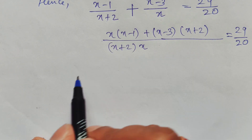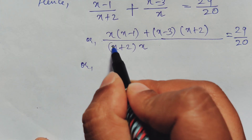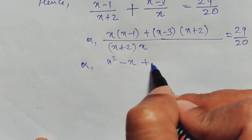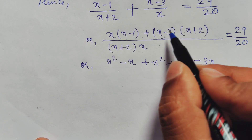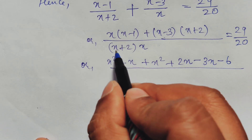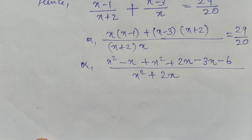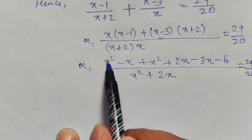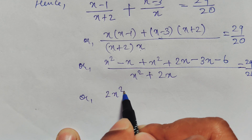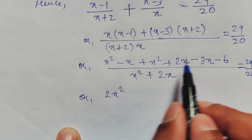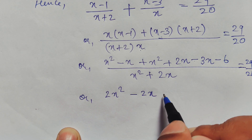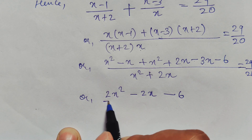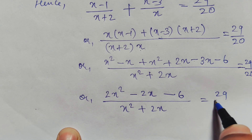Expanding the numerator by opening brackets: x times x gives x squared, minus x times 1 gives x, plus x times x gives x squared — wait, simplifying: we get x squared minus x, plus x times 2 gives 2x, minus 3 times x gives 3x, minus 3 times 2 gives 6. The denominator is x times x plus 2, giving x squared plus 2x. This equals 29 upon 20. Now simplifying like terms in the numerator: combining the x squared terms gives 2x squared minus 2x minus 6 over x squared plus 2x equals 29 upon 20.